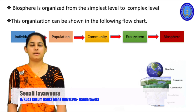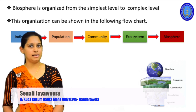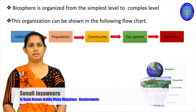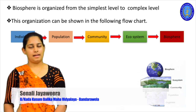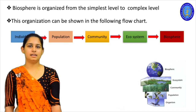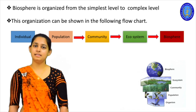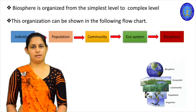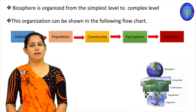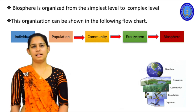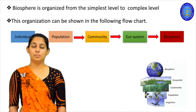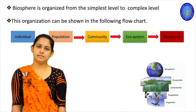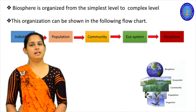We can write it as a flow chart. Starting from the individual, then population, community, ecosystem, and the biosphere. In the lesson you have to find out what is an individual, what is a population, and define all the organizational levels in detail. It is very important when you are writing or defining these organizational levels to use the appropriate words, because if not the meaning or definitions may change. There are some words to highlight, and you should remember how to write the definitions.